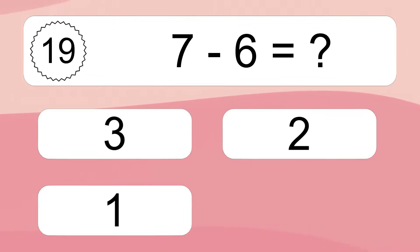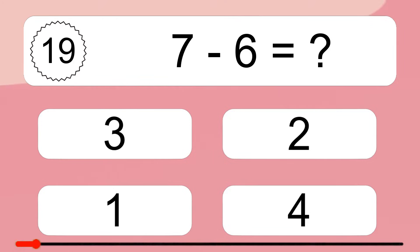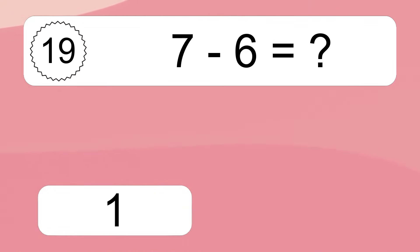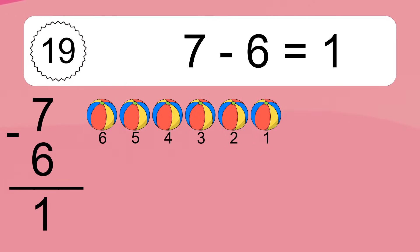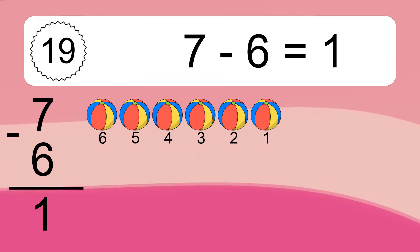7 minus 6 equals what? 7 minus 6 equals 1. Let's count it: 6, 5, 4, 3, 2, 1.